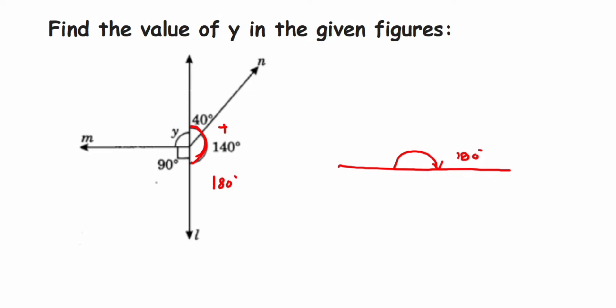So this is a straight line. We can say that angles lying on a straight line will be a linear pair. Right, if you add them up it's 180 degrees. So using that we can say that y plus 90 degrees, these two angles y and 90 degrees, should be equal to 180 degrees.